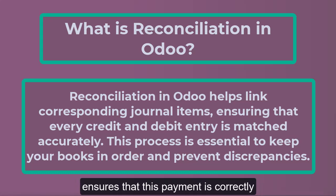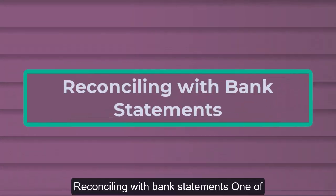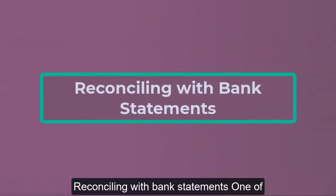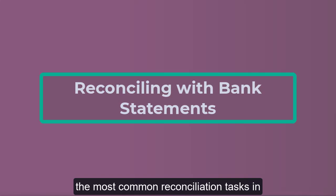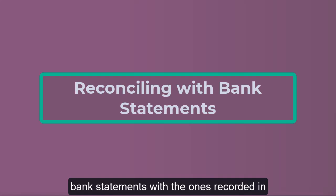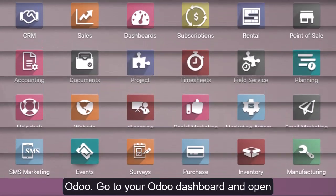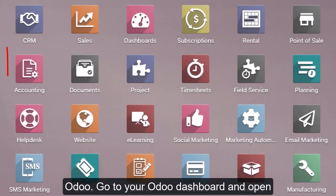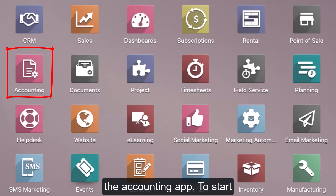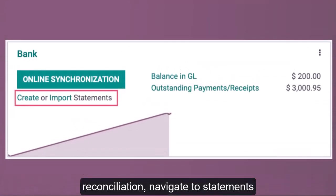For example, suppose a company ABC Limited receives a payment of one thousand dollars from a client. The reconciliation process ensures that this payment is correctly linked to an invoice in the system. Reconciling with bank statements: one of the most common reconciliation tasks in Odoo is matching transactions from your bank statements with the ones recorded in Odoo.